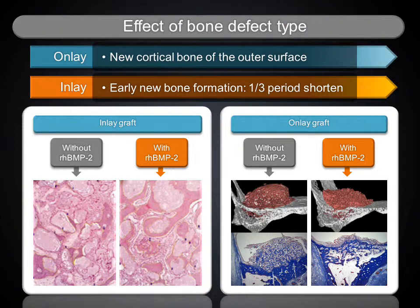Inlay bone grafts with RHBMP2 saturation were examined at 8 weeks healing in dog sinus floor. Results showed that new periosteal membrane and cortical bone were generated on the outer surface of the graft site, and the original cortical bone of the maxillary sinus inner wall was remodeled to cancellous bone. In contrast, grafts without RHBMP2 showed fibrotic tissue infiltration without new bone or periosteal membrane formation. As a result, in vertical and horizontal bone augmentation, autogenous block bone could be replaced with bone graft material saturated with RHBMP2.